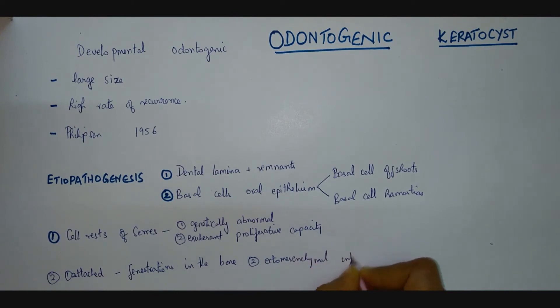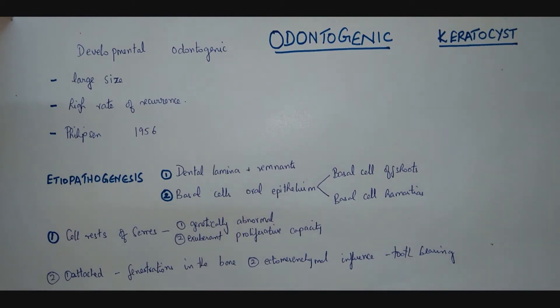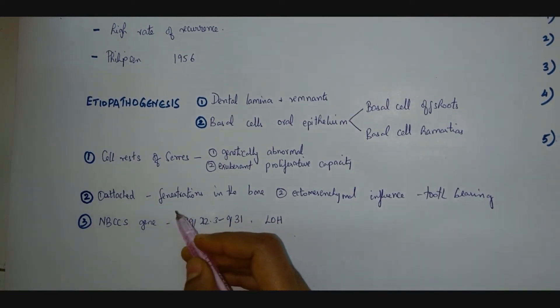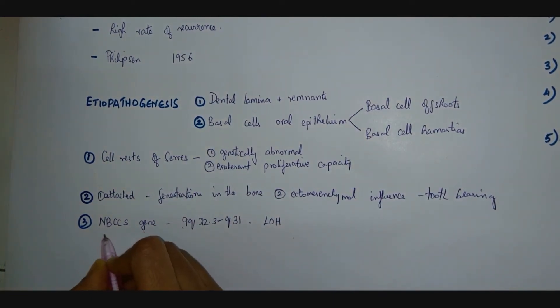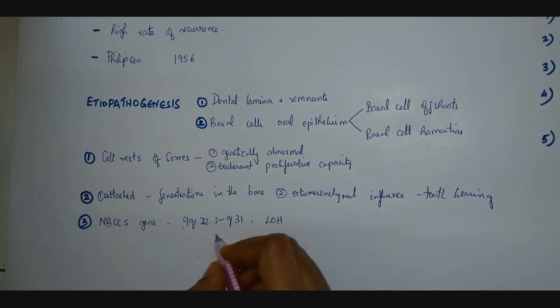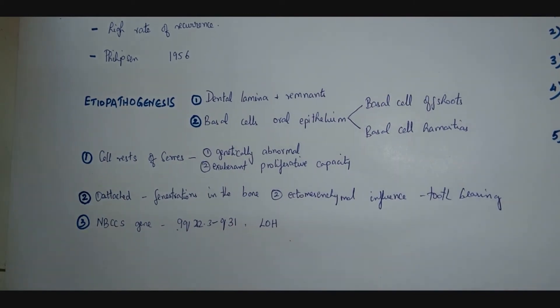The ectomesenchymal influence shown by these ectomesenchymal cells over the basal cells in the tooth bearing areas of the jaws. Another etiology that has been suggested for the sporadic cases of odontogenic keratocyst is the nevoid basal cell carcinoma gene, so loss of heterozygosity in this region can result in sporadic cases.